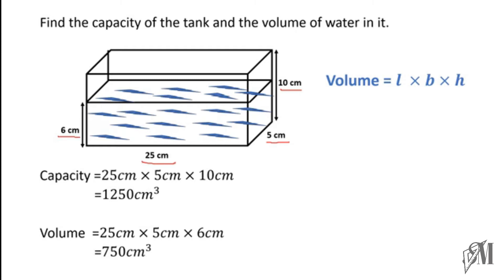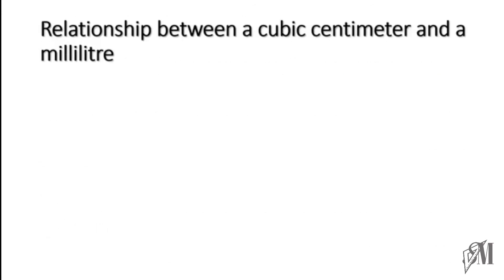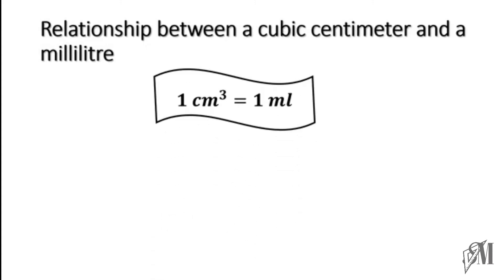This is how you apply the equation of volume to find the volume and capacity of a cuboidal tank. Now let's move on to the relationship between cubic centimeter and milliliter. The relationship is very easy: one cubic centimeter is equal to one milliliter. Just remember that — there is nothing more to understand here.